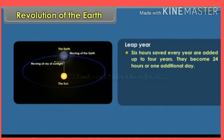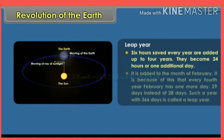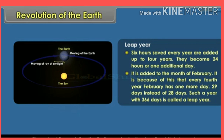Leap year: The six hours saved every year are added up over four years. They become 24 hours, or one additional day. This extra day is added to the month of February, which is why every fourth year February has one more day — 29 days instead of 28 days. Such a year with 366 days is called a leap year.